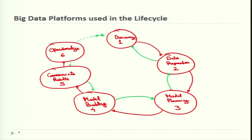In Phase 1 of the life cycle — the discovery phase — we define our problem statement and hypotheses. These can be drafted using general tools like Google Docs or Microsoft Word. To prepare the data and set the data set inventory, we use Hadoop, which can perform massively parallel ingestion and processing of data, including GPS location analysis, genomic analysis, and combining massive unstructured data feeds.